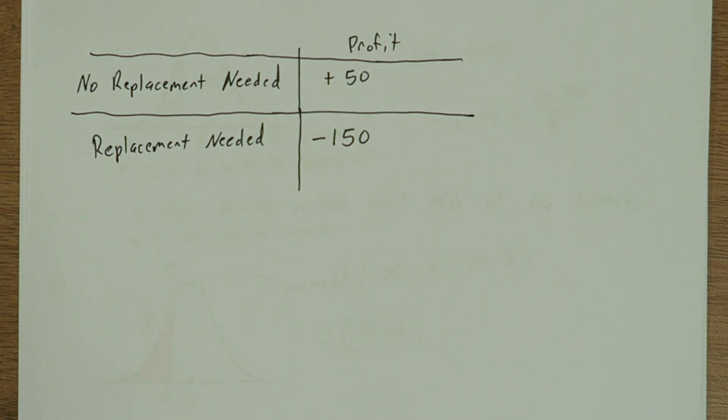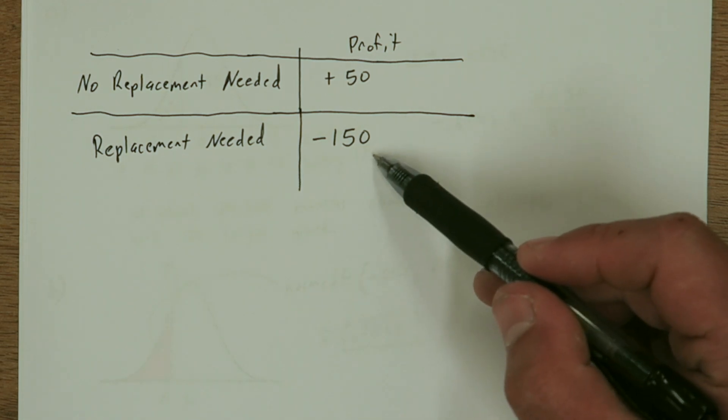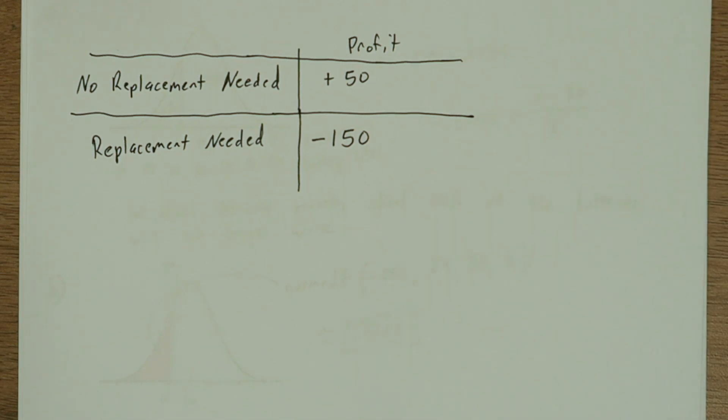So since the company only promises a replacement if the battery dies within 24 months, we only need to worry about this loss if the battery dies within 24 months.